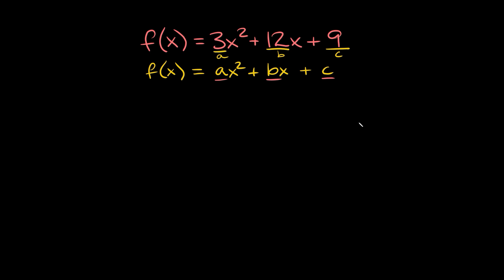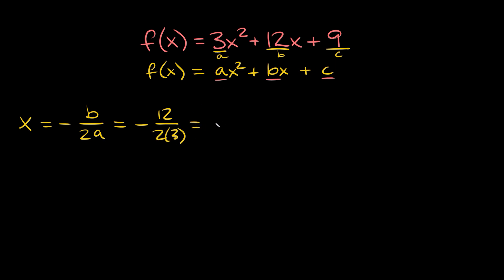The next part is going to be finding the vertex, specifically the x-coordinate. We can do that by using this formula: the x-coordinate of your vertex is equal to negative b over 2a. So that's negative b — b in this case is positive 12 — over 2 times a, and a is 3. So this is equal to negative 12 over 6, which is equal to negative 2.